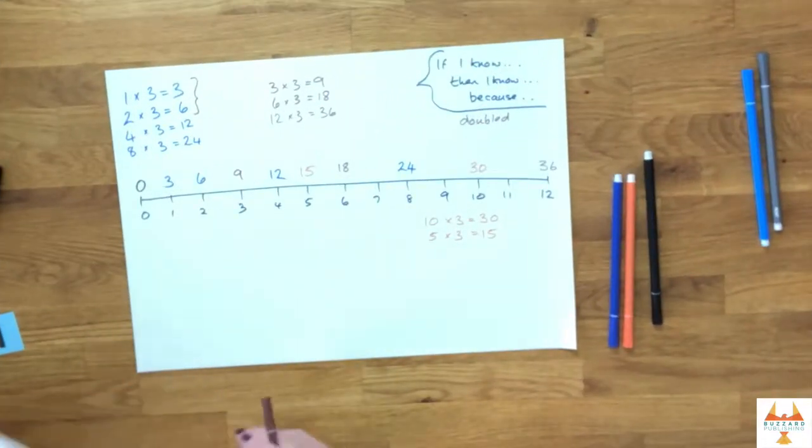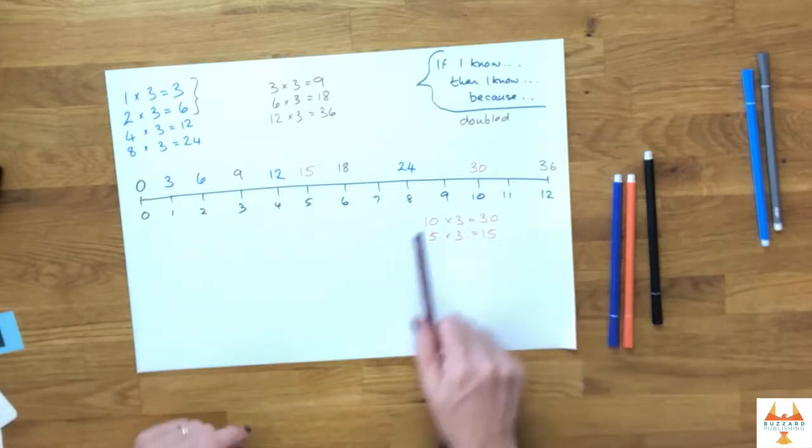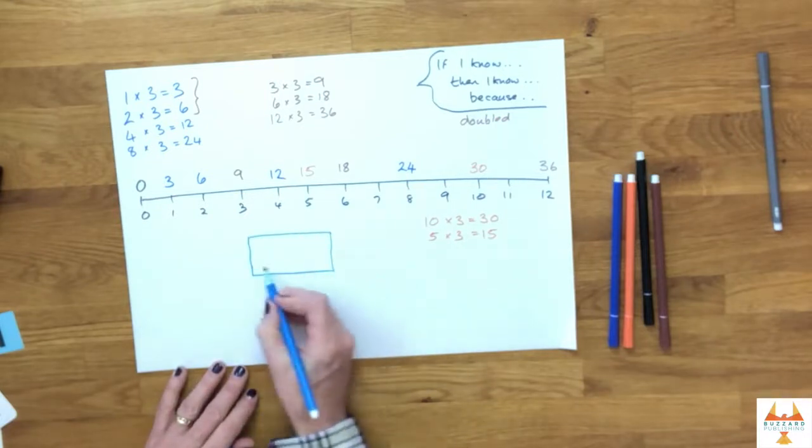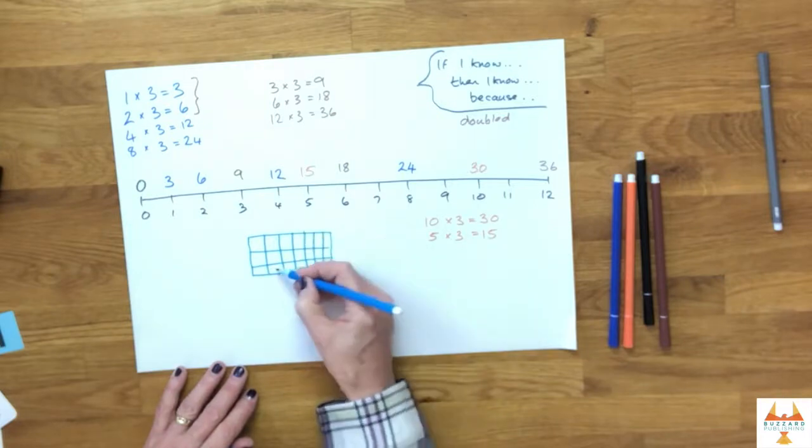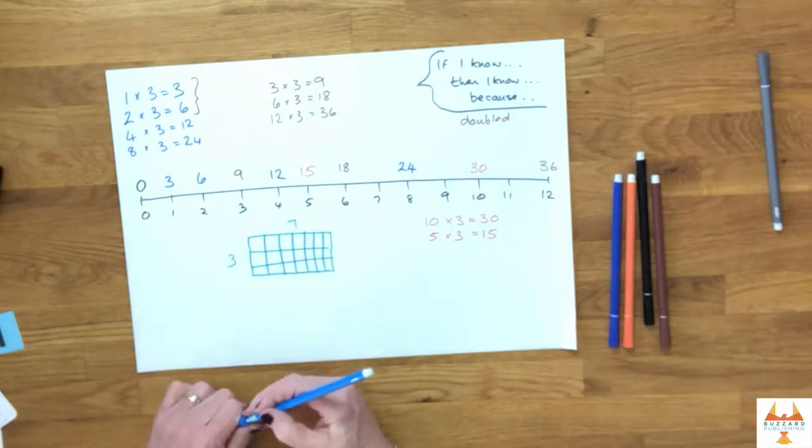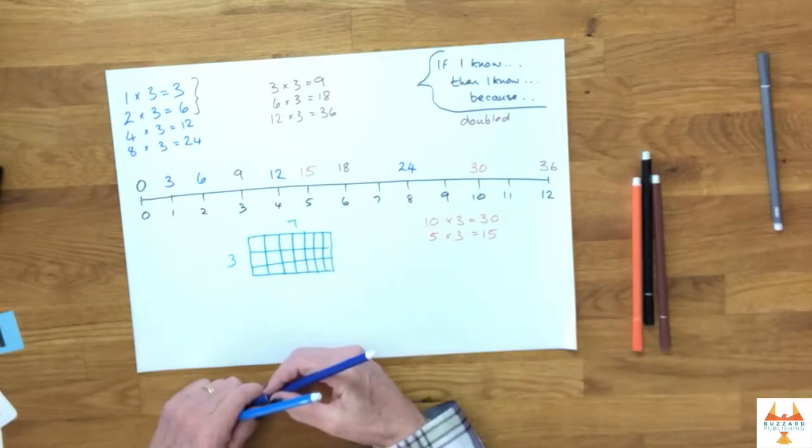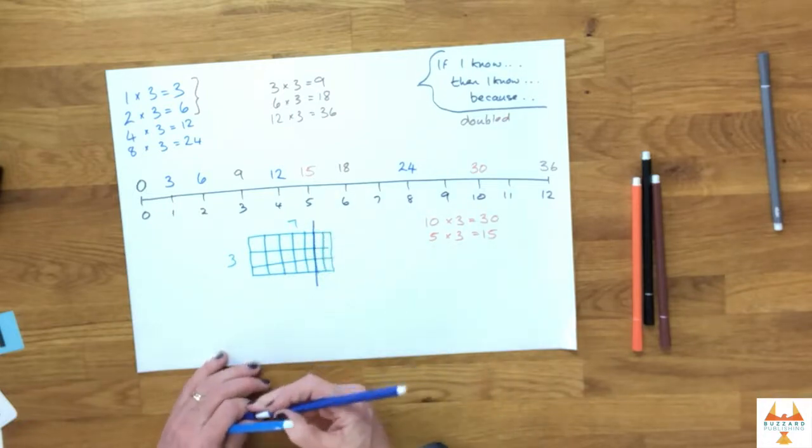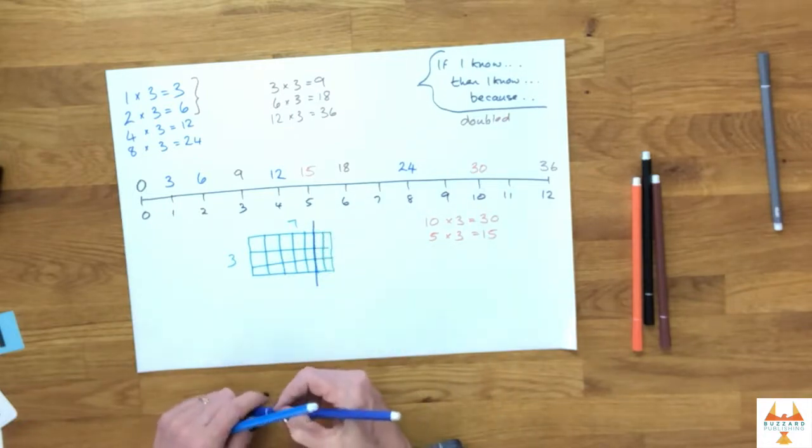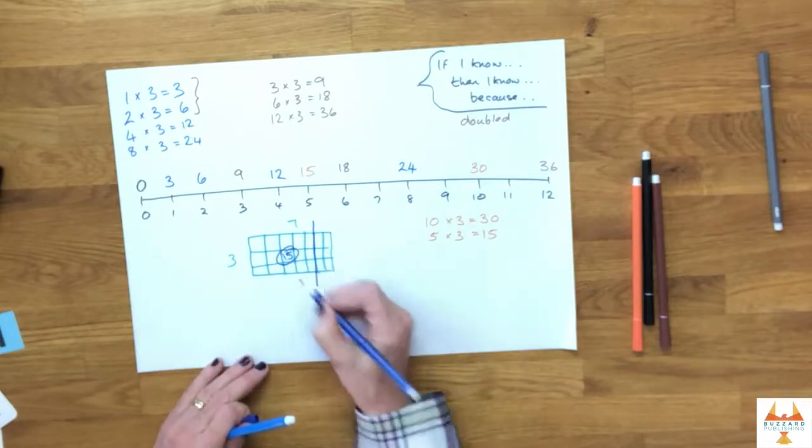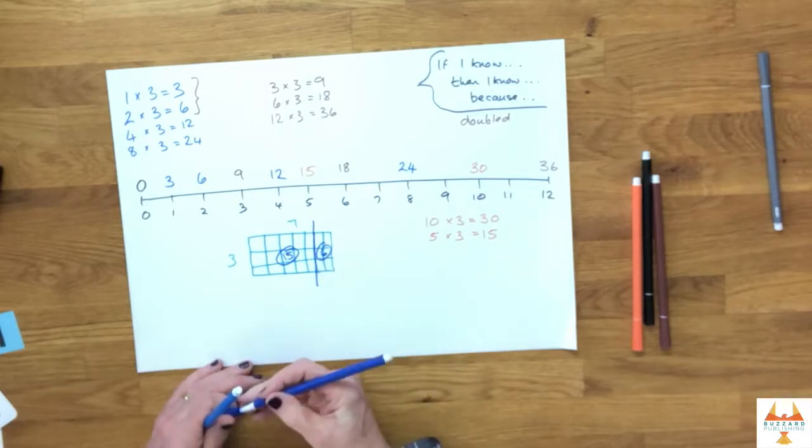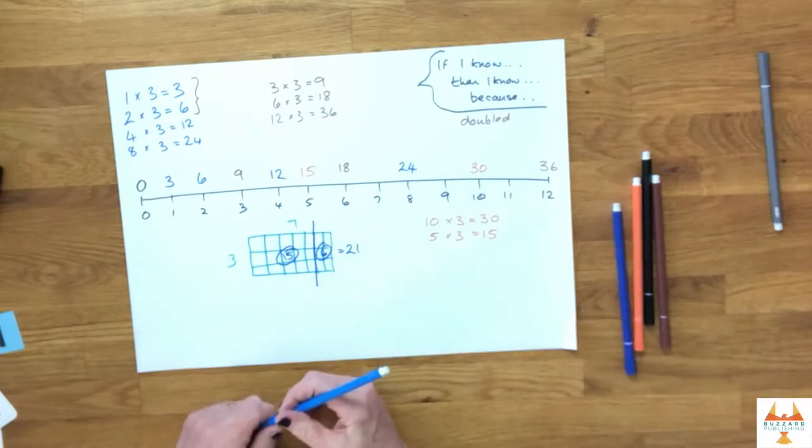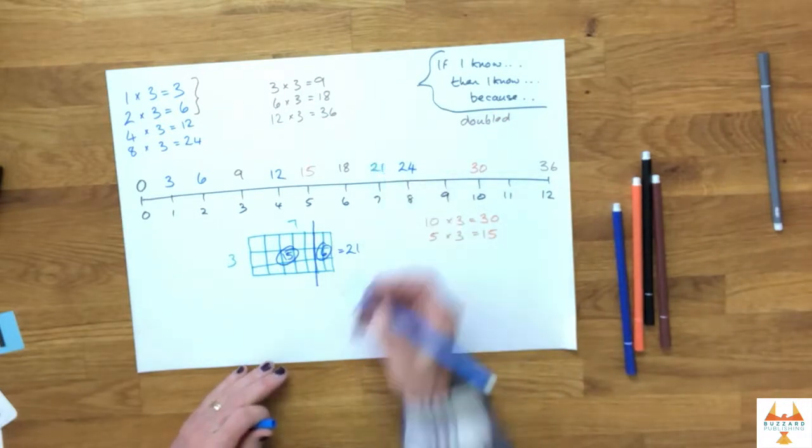Seven's often a tricky one. So I think we can support this by using an array. If we picture a three by seven array, here we go. I'll sketch one just here. There we go, just a rough sketch. So that's three by seven. I can think about what do I know that can help me calculate that? Well, I know that two threes are six and I know that five threes are 15. So if I split my array here, I've got 15 in this area and I've got six in this area, giving me 21 altogether. So three times seven, seven times three equals 21. There we go.